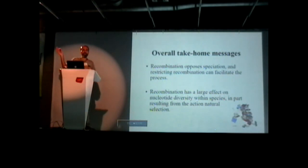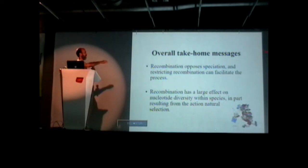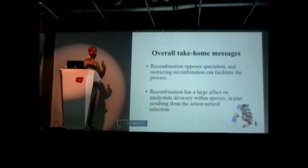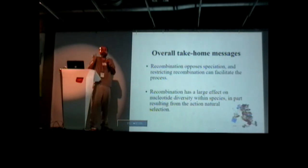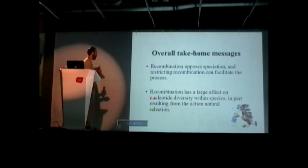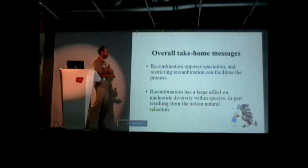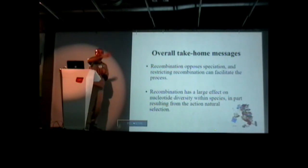Overall take-home message: first, recombination opposes speciation. If you have lots of recombination, it's more likely that species will fuse. Restricting recombination can facilitate speciation and make it easier for species to stay apart — that's the summary of the first half of the talk. Second, recombination has a big effect on DNA sequence or nucleotide diversity within species, and this seems to result in part from the action of natural selection, either hitchhiking or background selection.